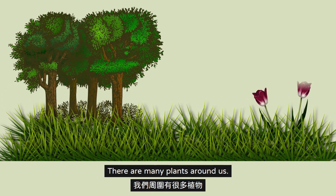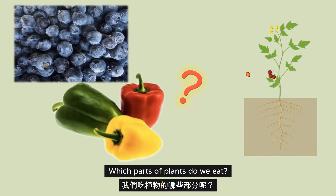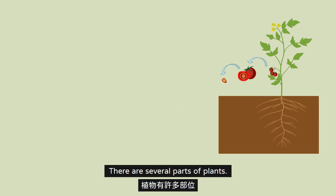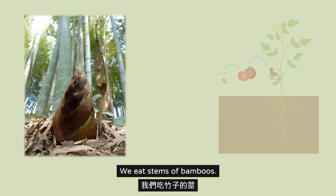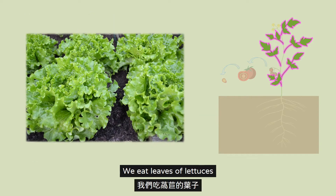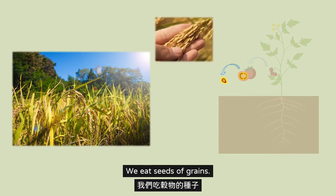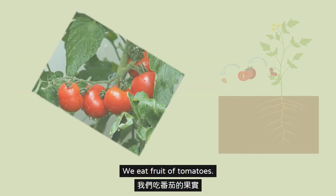There are many plants around us. Which parts of plants do we eat? There are several parts of plants. We eat stems of bamboos, leaves of lettuces, roots of white radishes, seeds of grains, and fruit of tomatoes.